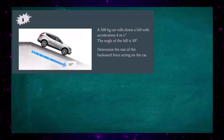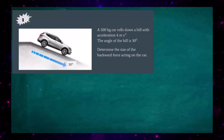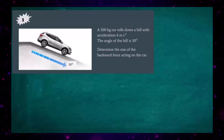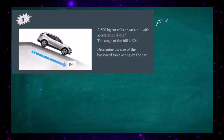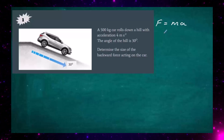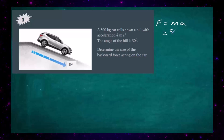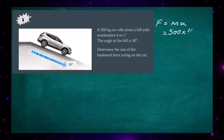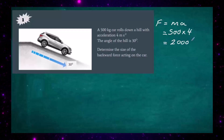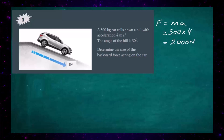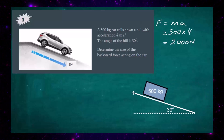Question 1: a 500 kilogram car rolls down a hill with acceleration 4 meters per second squared, and the angle of the hill is 30 degrees. We have to determine the size of the backward force acting on the car. We know the acceleration and mass, so we can work out the unbalanced force: F equals MA, which is 500 kilograms multiplied by 4, giving us 2000 newtons.